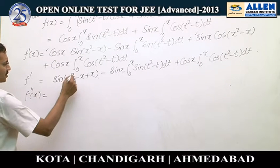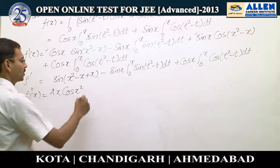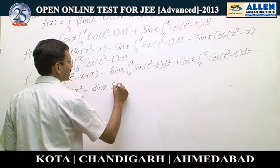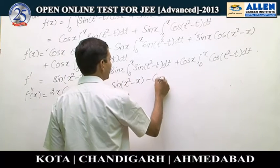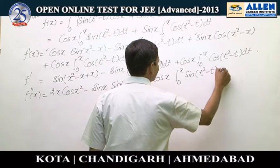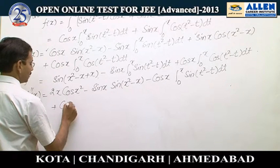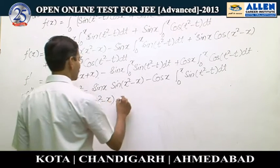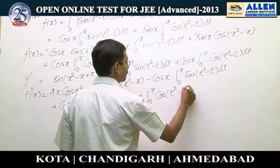Differentiating again, f''(x): the derivative of sin(x²) is cos(x²)·2x. Then -sin(x) as it is, the differentiation of the definite integral gives sin(x² - x), minus cos(x)·∫₀ˣ sin(t² - t) dt, plus cos(x) as it is, the differentiation gives cos(x² - x), minus sin(x)·∫₀ˣ cos(t² - t) dt.